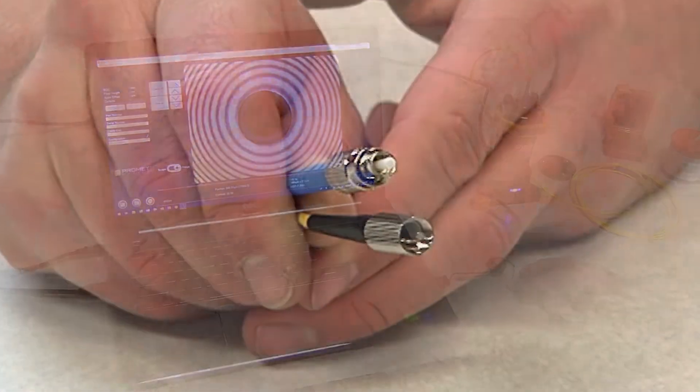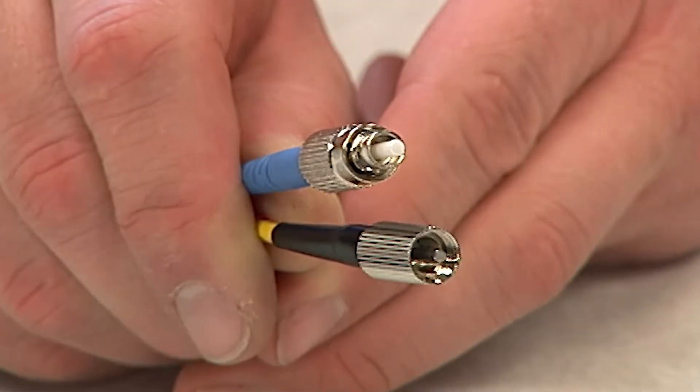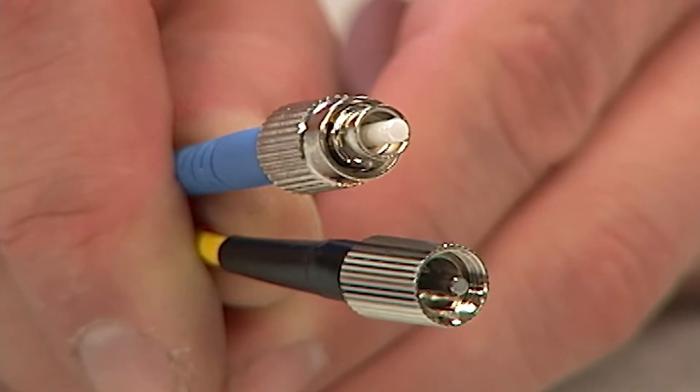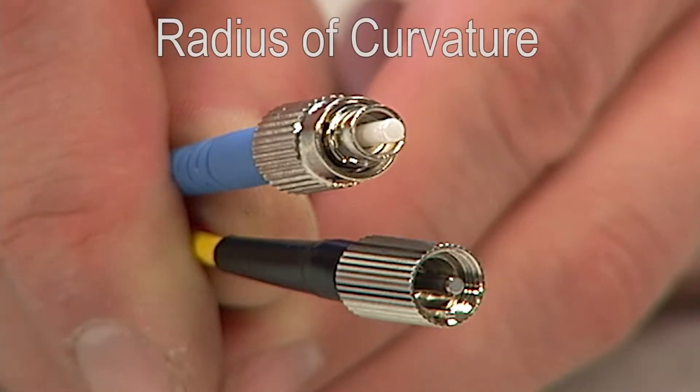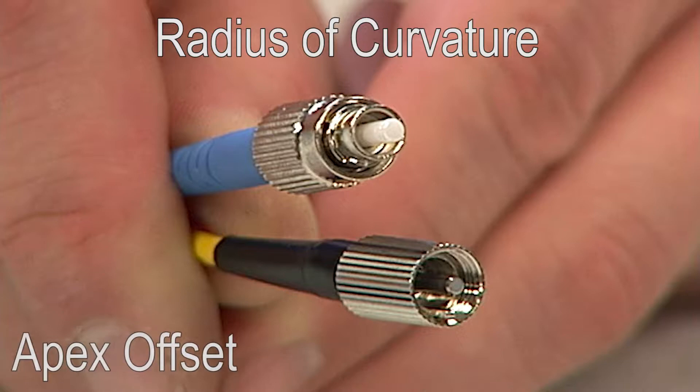Industry standards describe how to measure the three-dimensional properties of a ferrule end-face. The three main properties measured are radius of curvature, apex offset, and fiber height relative to the ferrule surface.